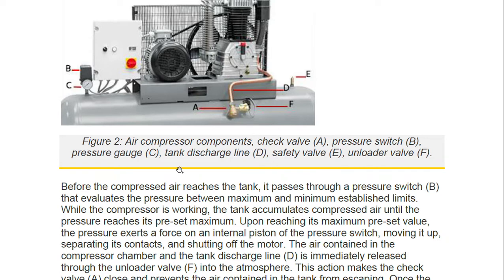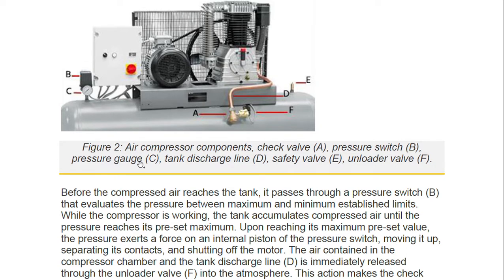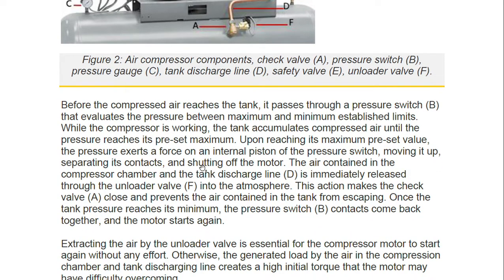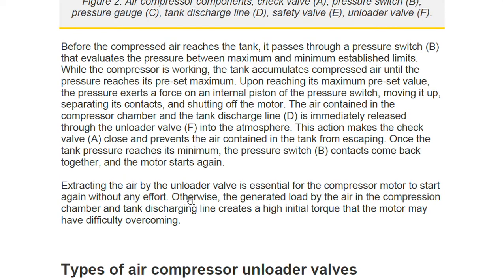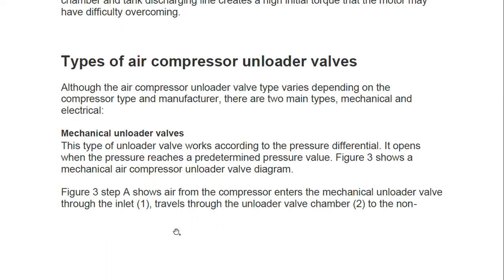This is a typical diagram — D is the safety valve, and this is the tank discharge line. F is the unloader valve, which is of solenoid type. This is the safety valve on the tank — the type you must have seen on petrol pump compressors. So we have the types of unloader valves.